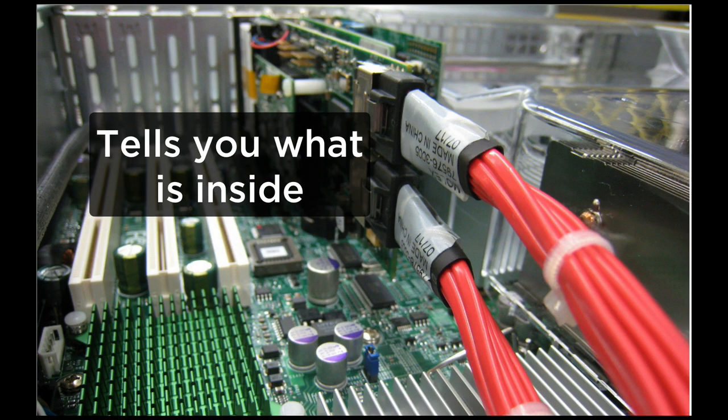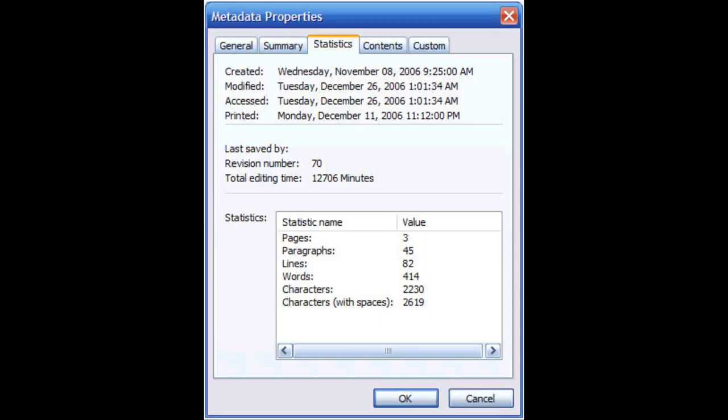Additionally, these instructions also tell you the contents inside of the document. Lastly, these instructions also tell you the metadata of the document. Metadata is the data about the data contained inside — so it could be things like the author of the document, the last modified date, the version number, and other things.